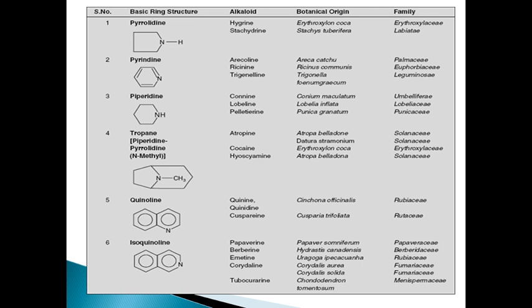The fourth class is tropane alkaloids. Atropine is the example of alkaloid which comes under the tropane group. Atropa belladonna is the botanical origin, and the family is Solanaceae.